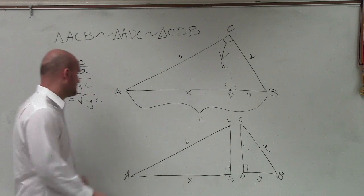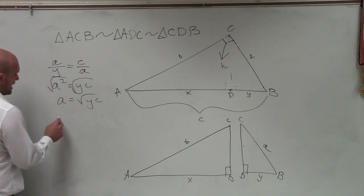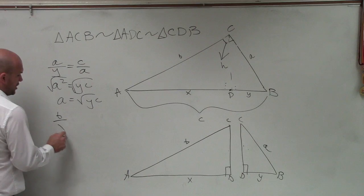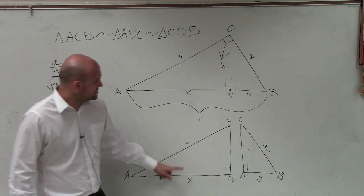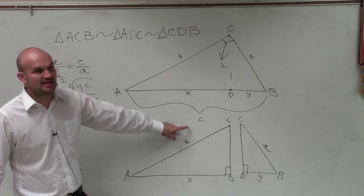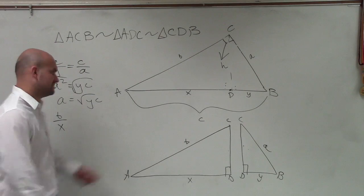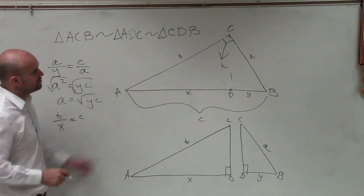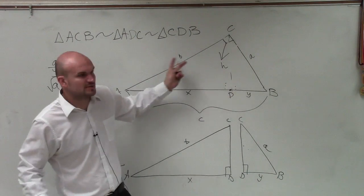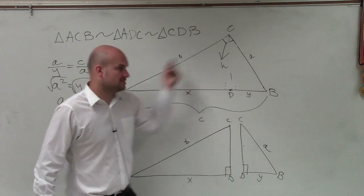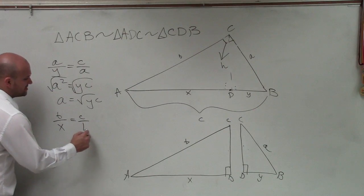So I can say, or hypotenuse is to long leg. So hypotenuse is to long leg as my hypotenuse again here for the big triangle, c, is to—what's the long leg? A or b? Which one's the long leg? Which one's the short leg? B. B is the long leg. So c is to b.